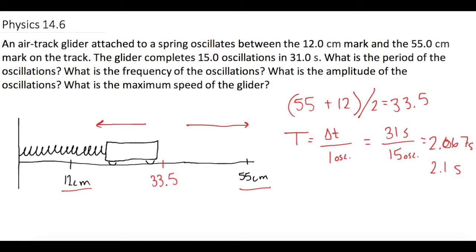Then they say, what is the frequency of the oscillations? We can just take in our calculator 2.067, do one divided by that, and that will give us our answer. We would get the same answer by taking the number of oscillations that happens in 31 seconds. So per second, we will have 0.484 hertz.